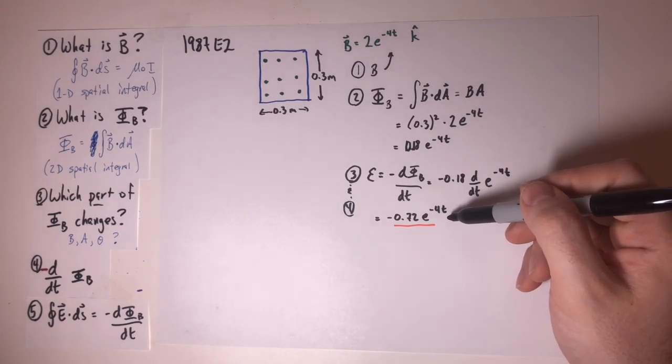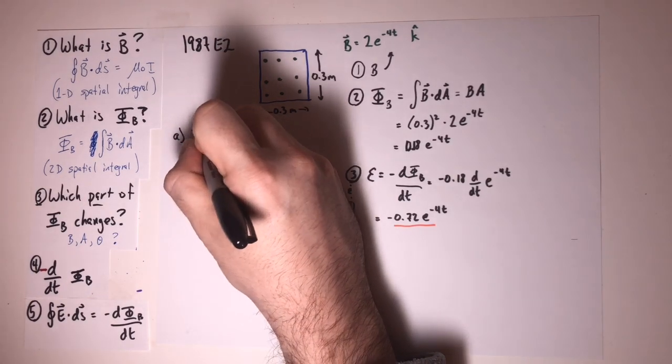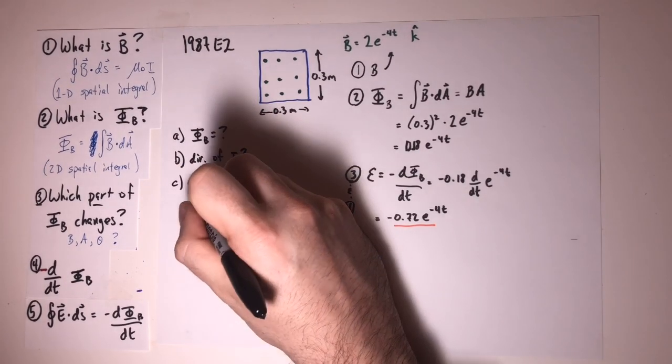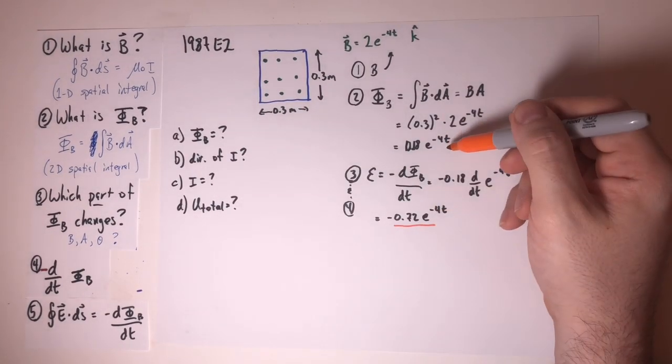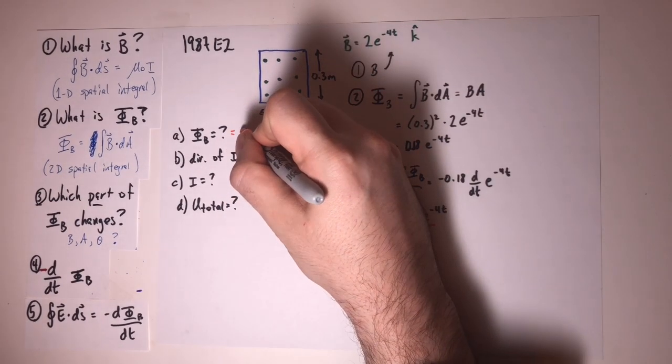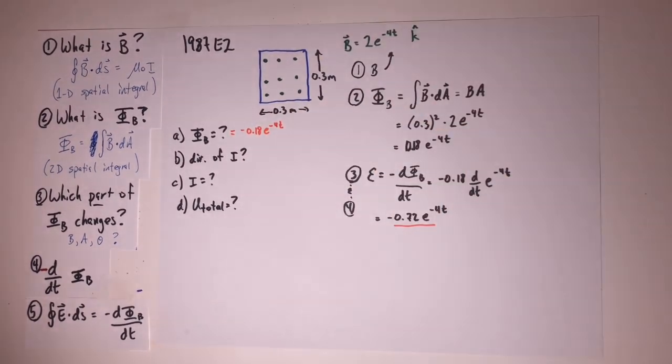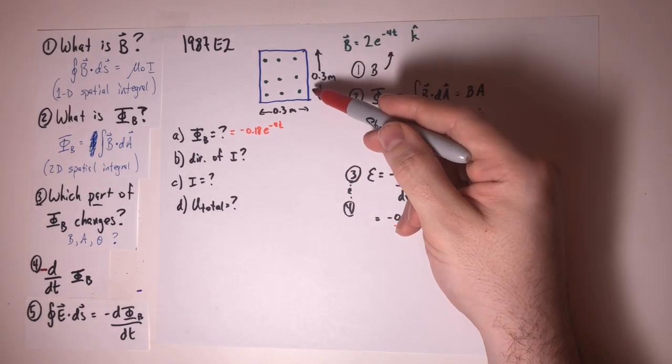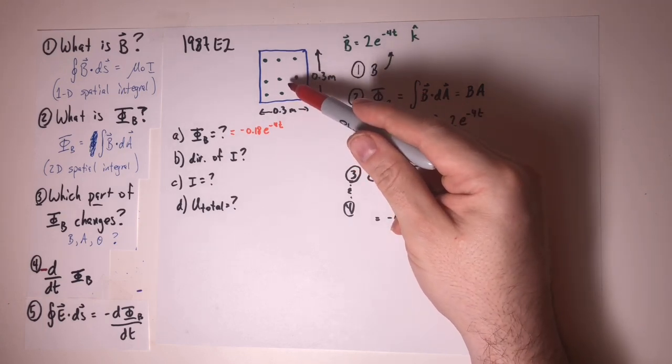Now that I've got the induced EMF, maybe it's time to look at what was being asked for. Notice we've already gotten the first thing solved. The flux is simply negative 0.18 e to the negative 4t. As for the direction of the current, we should take a moment and think about what's going on here. Remember that it would be naive to assume that the direction of the induced current would make inward facing field lines. Sometimes it's not that way.